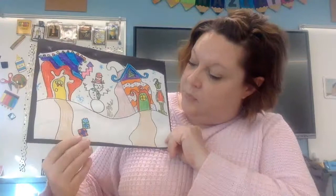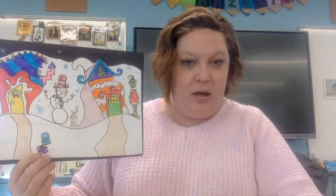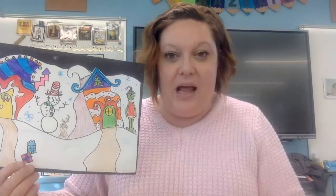Now that we know all about Dr. Seuss, we're going to be creating a landscape in the style of his artwork. As you can see, I have lots of houses. I've got a crooked snowman and they're using organic shapes instead of geometric. Alright, let's go get creating.